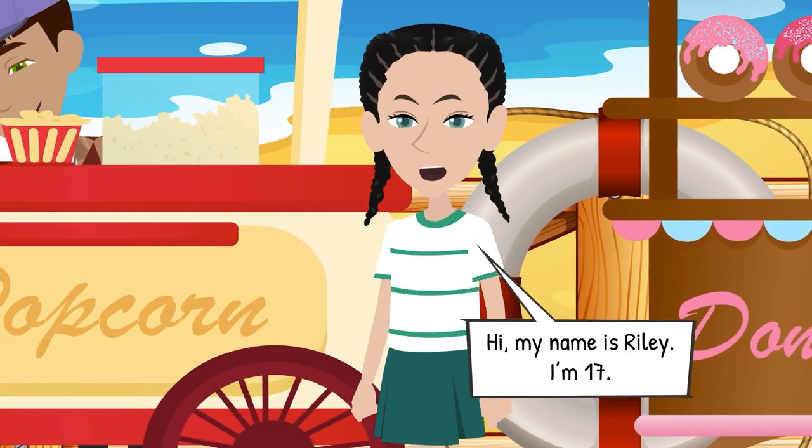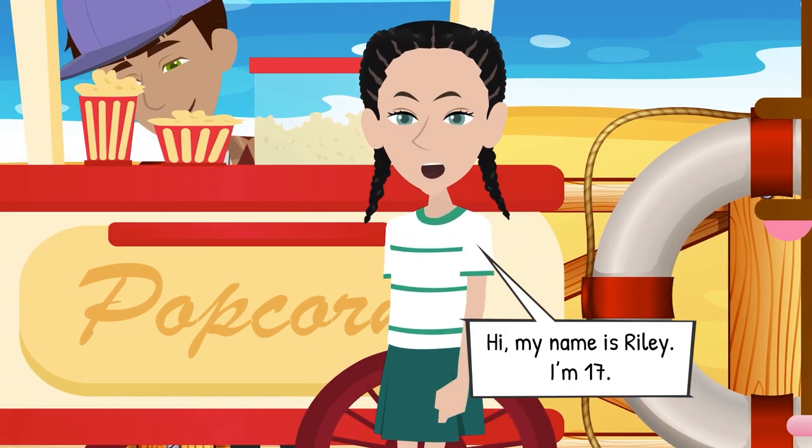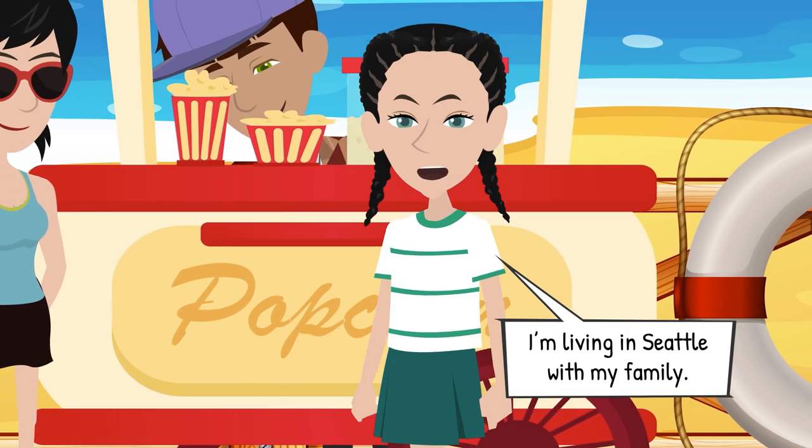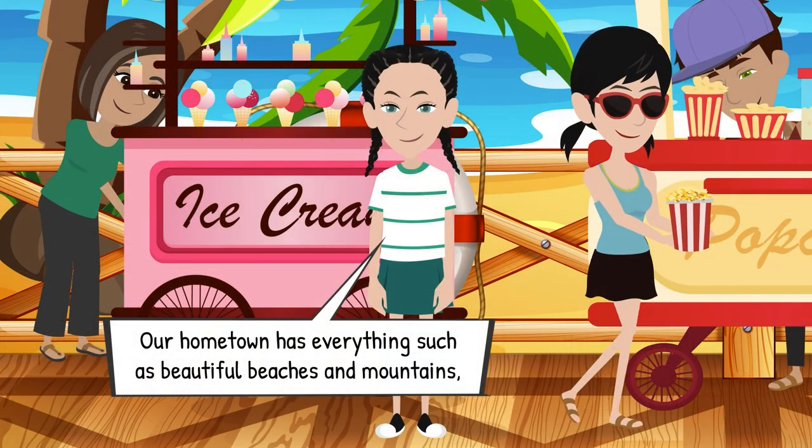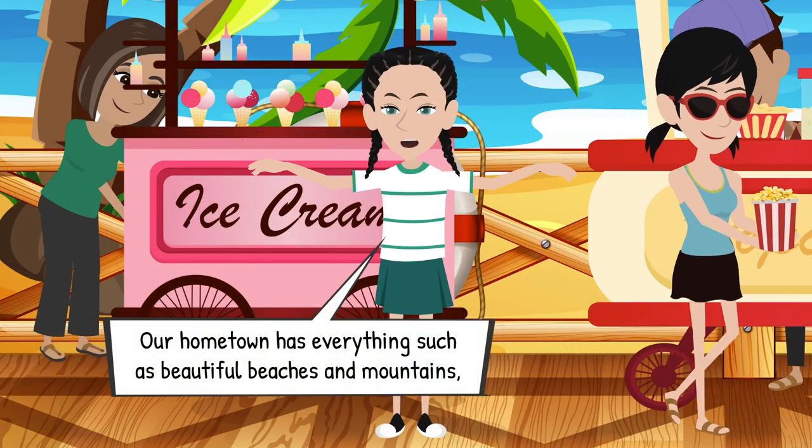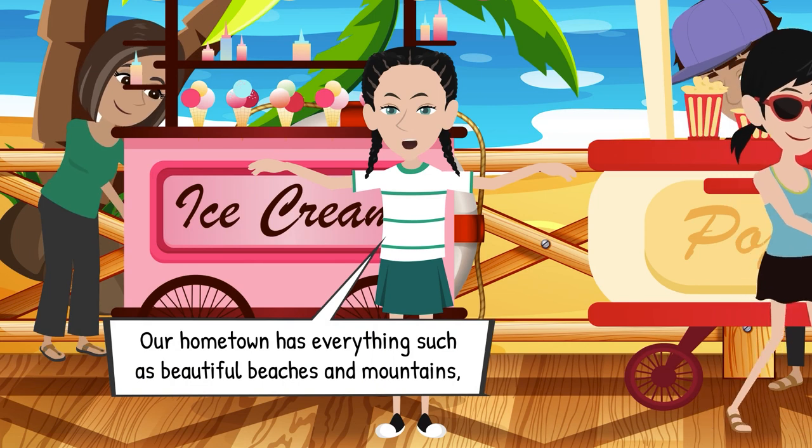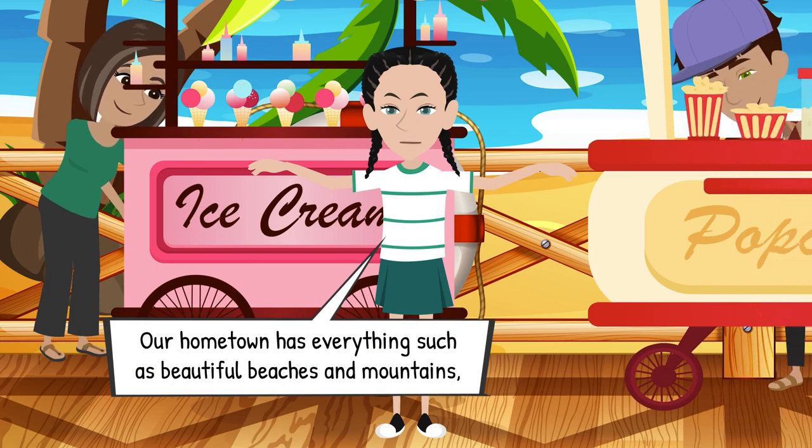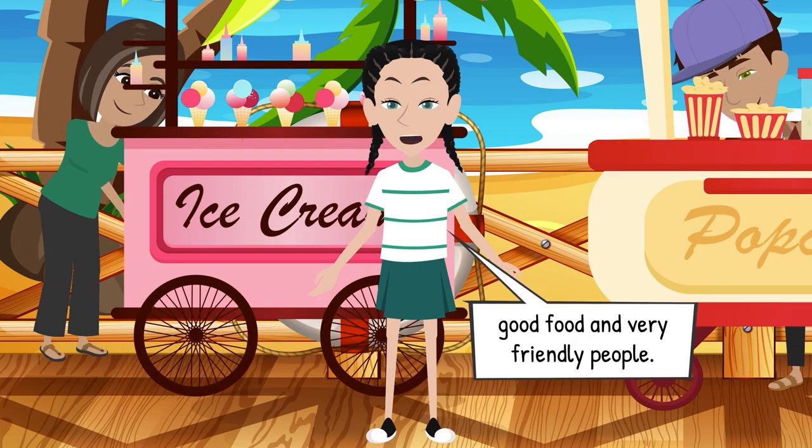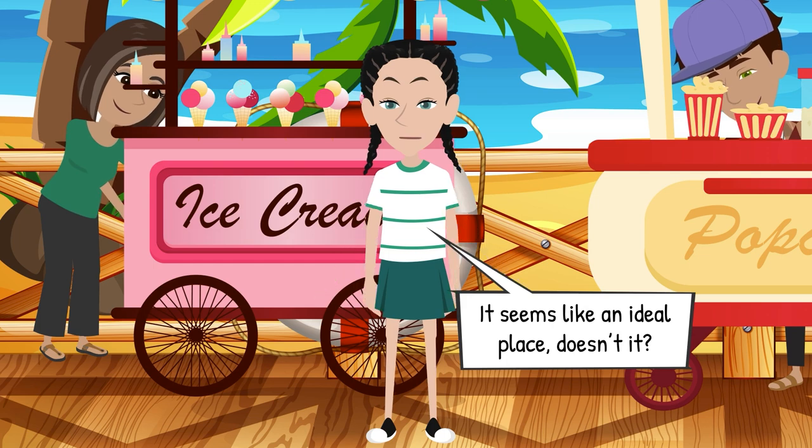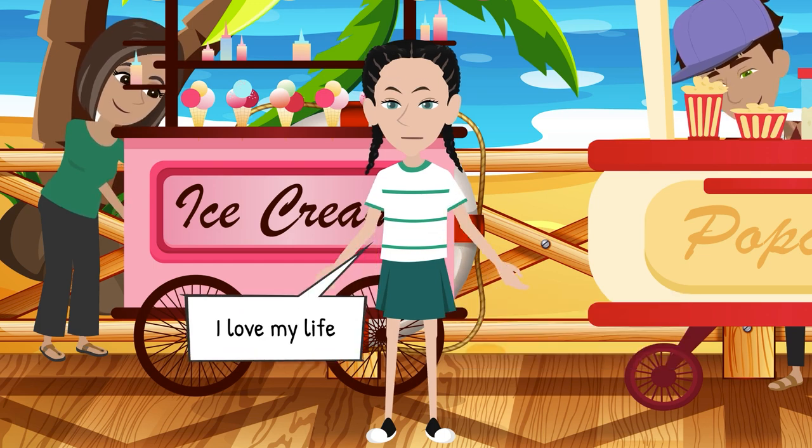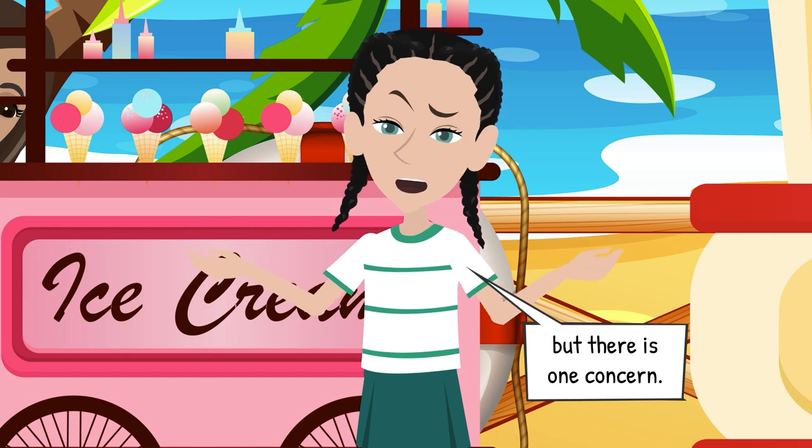Hi, my name is Riley. I'm 17. I'm living in Seattle with my family. Our hometown has everything such as beautiful beaches and mountains, good food, and very friendly people. It seems like an ideal place, doesn't it? I love my life. But, there is one concern.